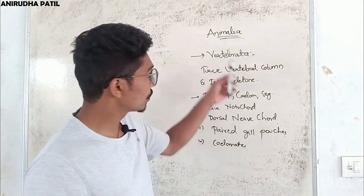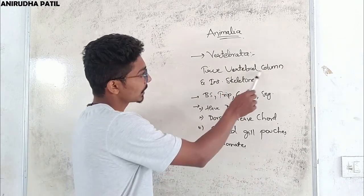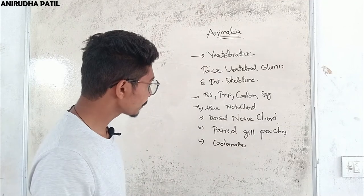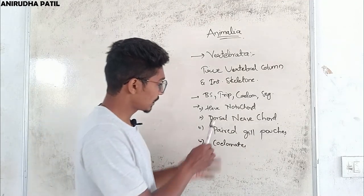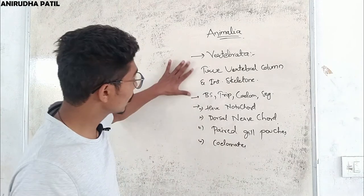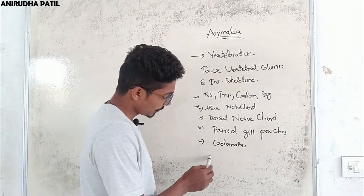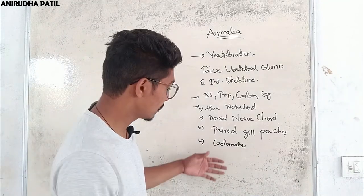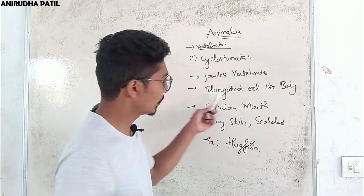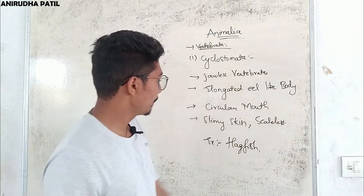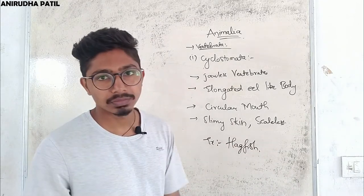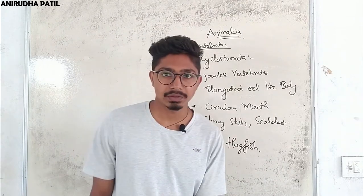The next group is Vertebrata, more evolved than the other groups. They have a true vertebral column and internal skeleton. They are bilaterally symmetrical, triploblastic, coelomate, and segmented. Features include a notochord, dorsal nerve cord, paired gill pouches, and they are coelomates. The first class in Vertebrata is Cyclostomata — jawless vertebrates with an elongated eel-like body, circular mouth, slimy scaleless skin. An example is hagfish.